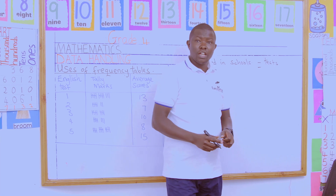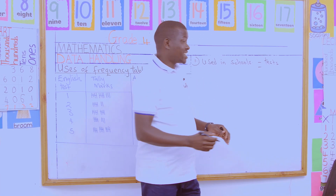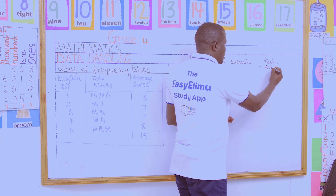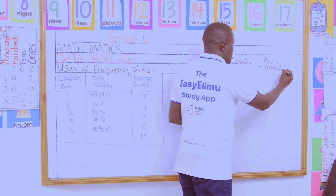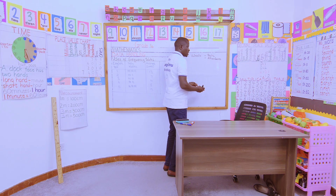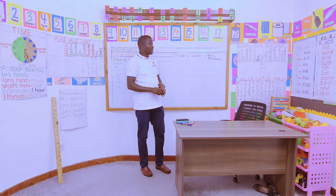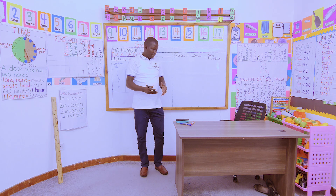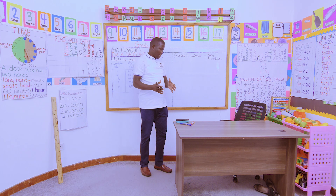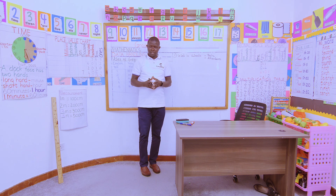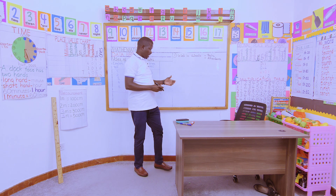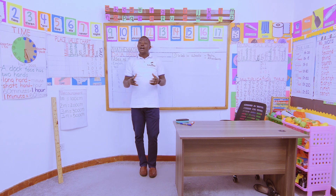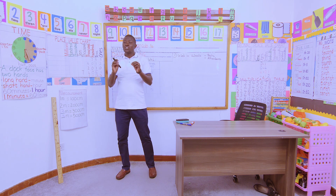Frequency tables can also be used to tabulate attendance in schools. For example, in a certain week or month, different classes have attended different lessons. That is another way we can use frequency tables in schools.